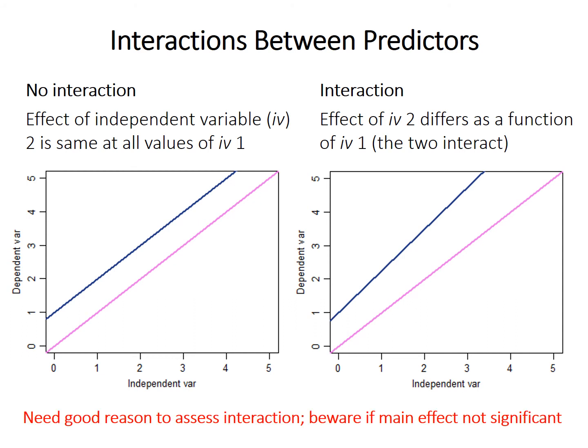Some warnings about interaction terms: you should probably have a good theoretical justification before you even look at the data to assess interactions. If you have some theory beforehand, by all means look at it, but if not, maybe avoid it. Multiple regression has a lot of opportunities for researcher degrees of freedom — you can look at various combinations of independent variables with or without interactions. Be careful that you're not hunting around for significant effects. And beware if you find a significant interaction between variables that are each individually not significant — that could be a valid finding, but you should have good justification and be aware of researcher degrees of freedom issues.